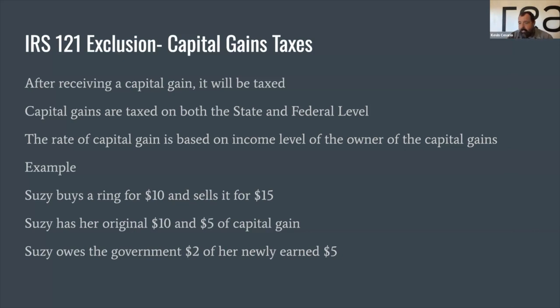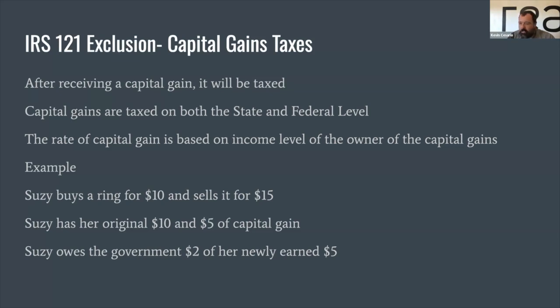Basically the money you made is your capital gains. After receiving a capital gain, you're going to be taxed both on the state and federal level — usually it's around 34%. The rate of capital gains is going to be based on income level. Some people can offset capital gains with losses on their taxes — if they sell something for less or lose money in some venture, they can balance it out. General rule of thumb: 34% of all the money you make for profit goes to the government. So Suzy bought the ring for ten dollars, sold it for fifteen, has a five-dollar cap gain — she owes the government two dollars of that newly earned five, so she actually pockets thirteen dollars.